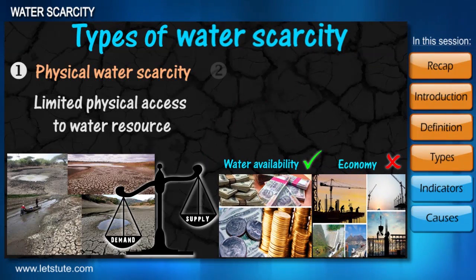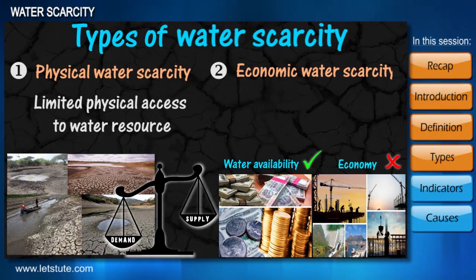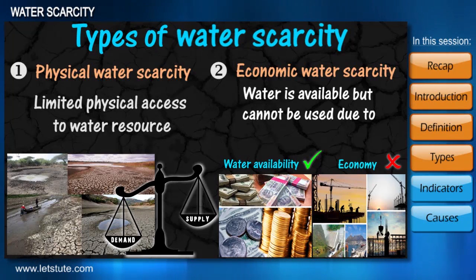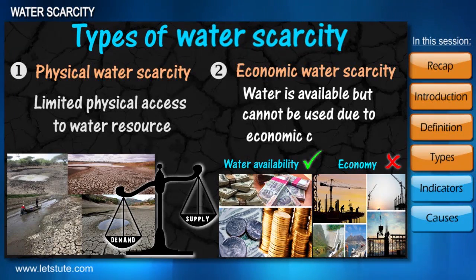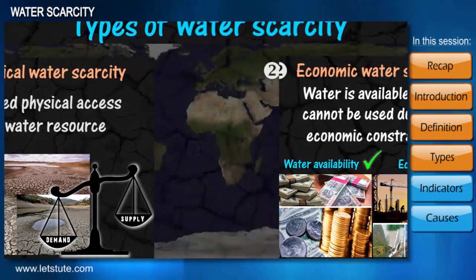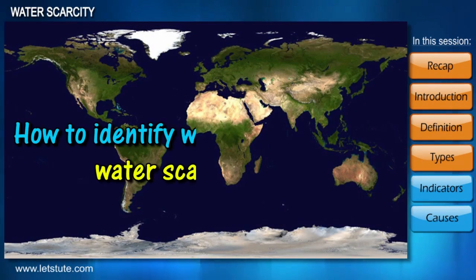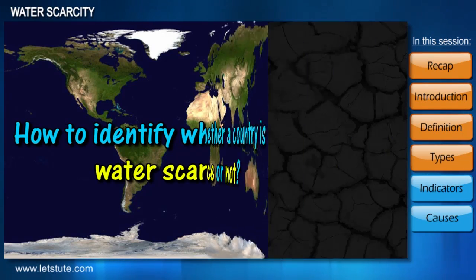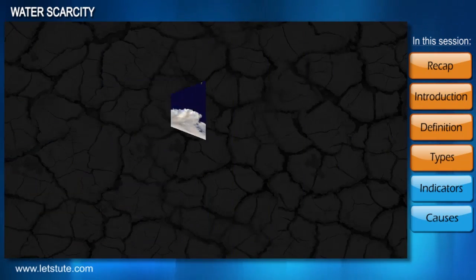This brings us to the second type: economic water scarcity. It exists when there is an adequate source of water in an area but no proper means to utilize it, in terms of money or technological know-how. There are certain indicators that reflect whether a country is water scarce or not.